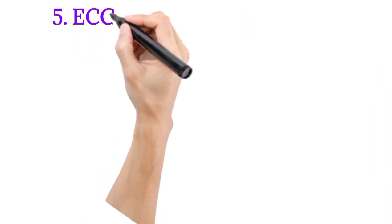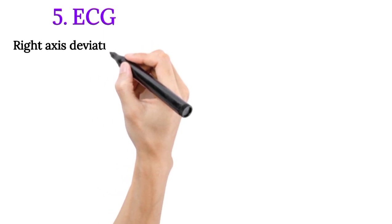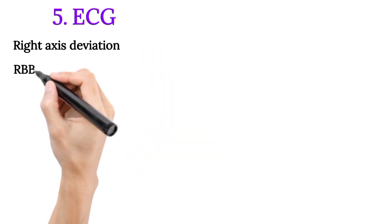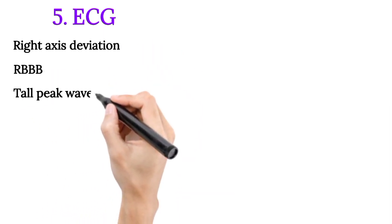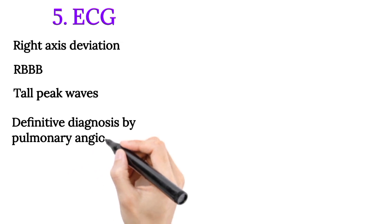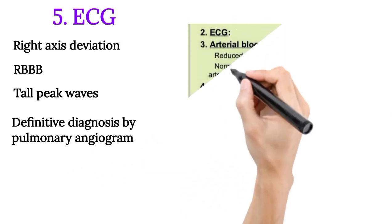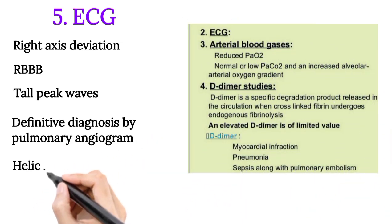Electrocardiogram findings include right axis deviation, RBBB, and tall peaked T waves. Definitive diagnosis is made by pulmonary angiogram or helical CT scan.